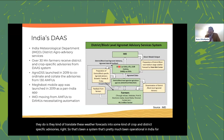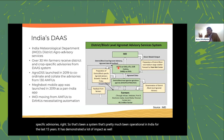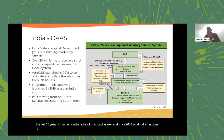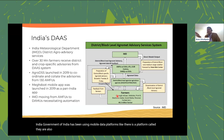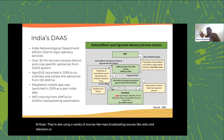Each AMFU typically caters to about five to six districts. Twice a week — on Tuesdays and Fridays — these AMFUs look at IMD's forecast data and the observed weather for those districts under their jurisdiction. Using their regional knowledge of local cropping practices, they translate weather forecasts into crop and district specific advisories. This system has been operational in India for about 15 years and has demonstrated significant impact.